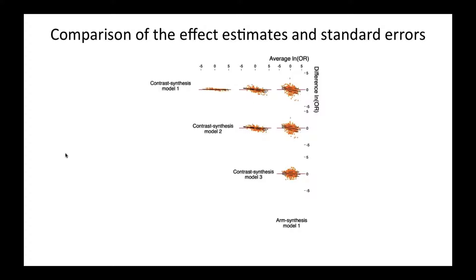When we look at the arm synthesis model and compare it to the contrast synthesis models 1, 2, or 3, we see poorer agreement, and the difference in the log odds ratio starts to become a bit more variable.